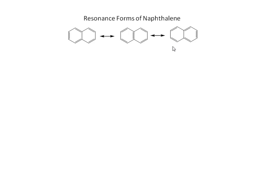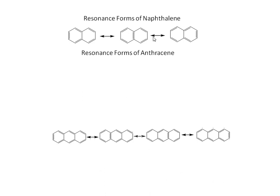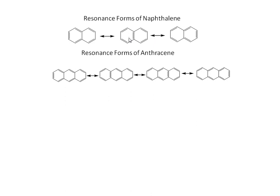Next we will see the resonance forms of anthracene. There are four resonance forms of anthracene. There are three rings with a total of seven double bonds, meaning fourteen pi electrons are present. Naphthalene has ten pi electrons. According to Hückel's rule, these cyclic compounds with alternating double bonds satisfy the 4n+2 rule. Both anthracene and naphthalene undergo electrophilic substitution reaction.